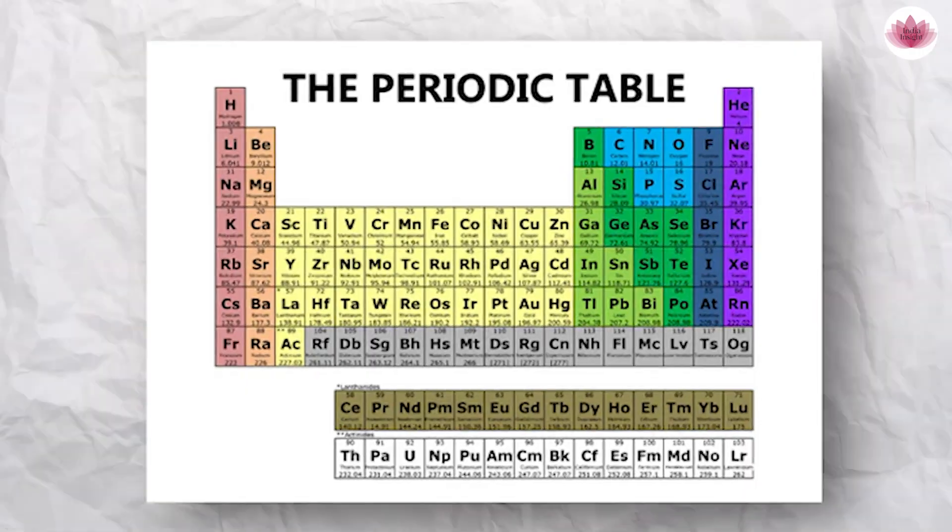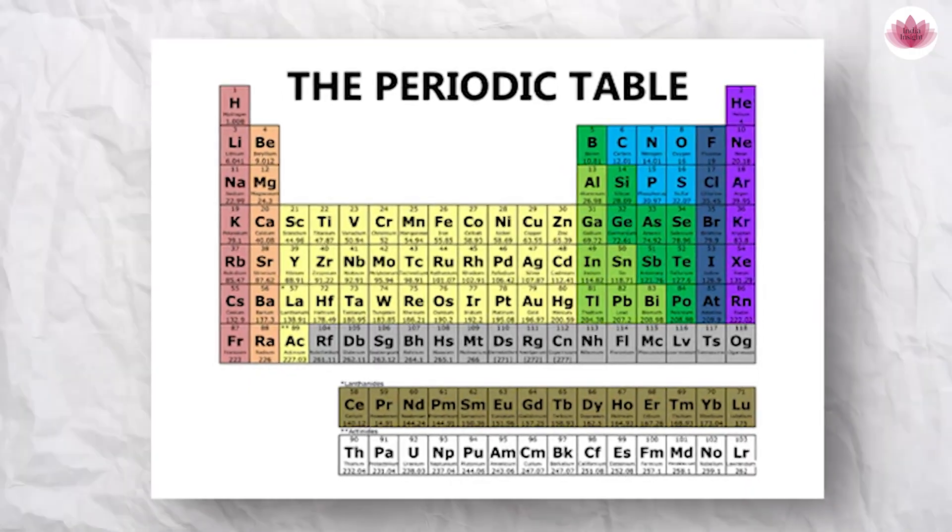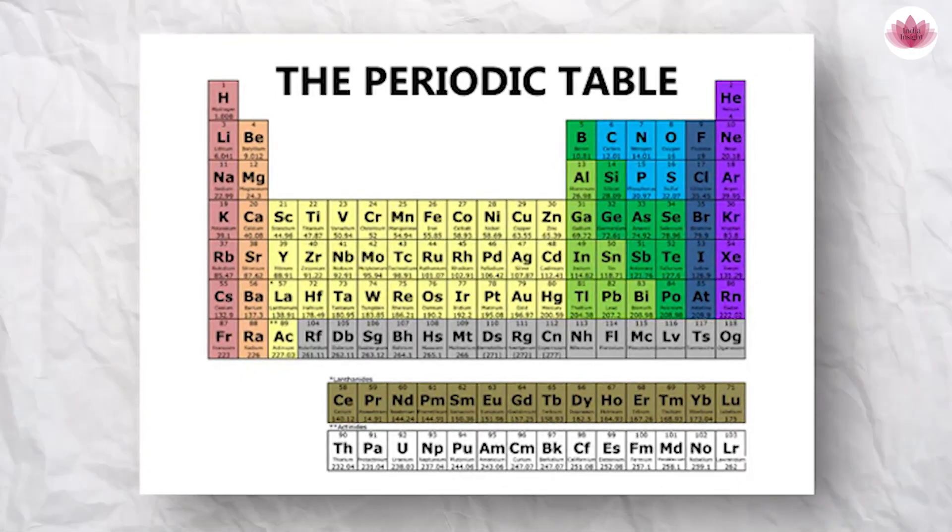You should have seen these colorful charts — it's called the periodic table. It is a cornerstone of chemistry because it periodically organizes the elements based on their chemical properties. But what if I told you that Sanskrit might have helped in the creation of the periodic table?